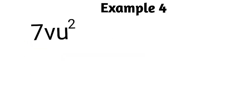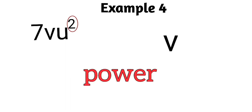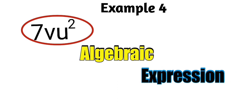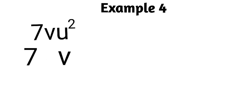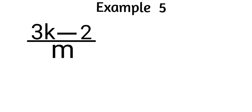Example four: 7vu squared. The variables are v and u, where u has a power of 2. The coefficient 7 and variable v have no visible sign between them, so multiplication is implied. Similarly, v and u have no sign between them — multiplication is also implied there. Therefore, example four is an algebraic expression. Remember: no sign between a number and a variable means multiplication.